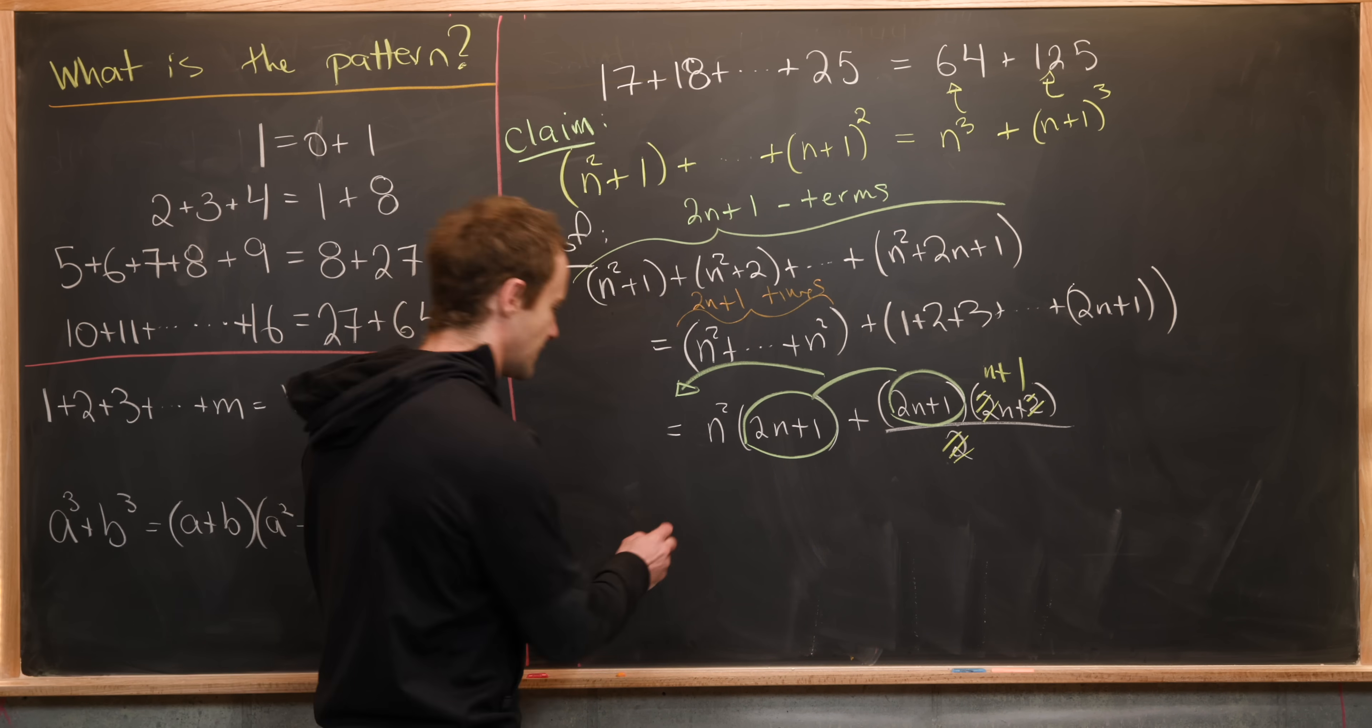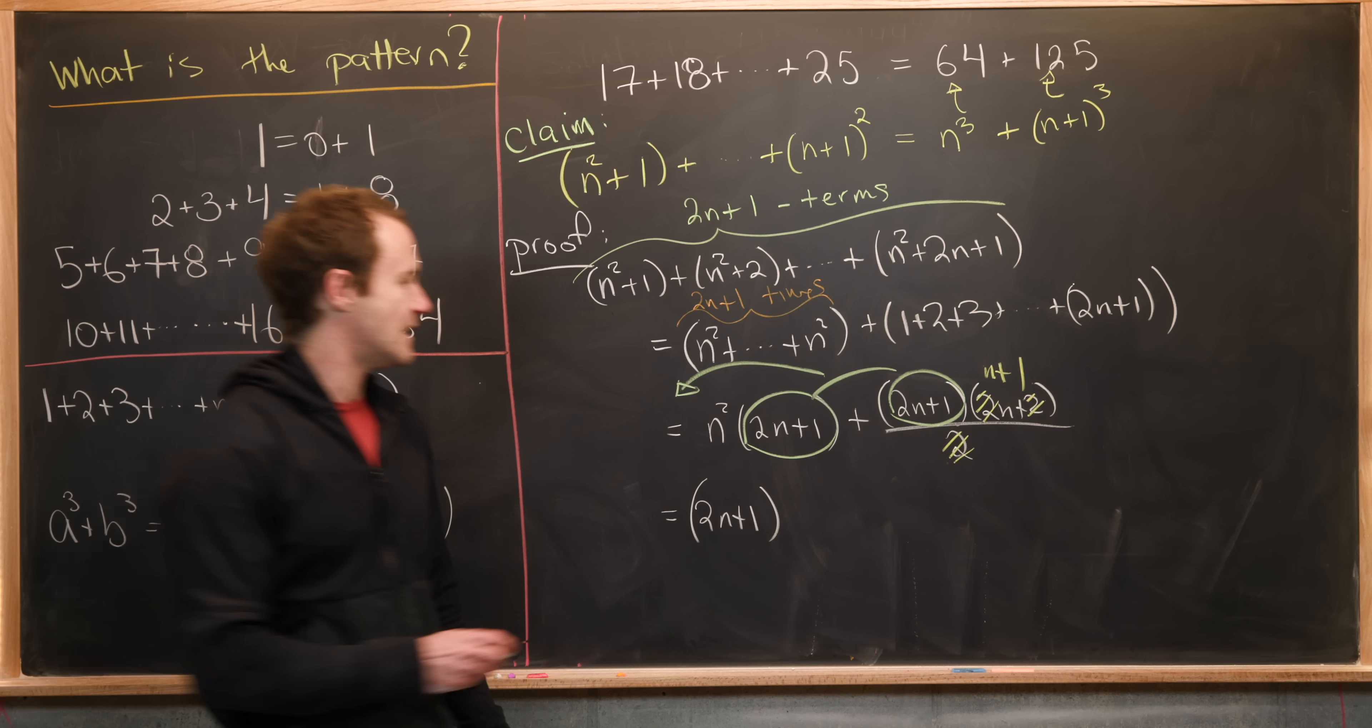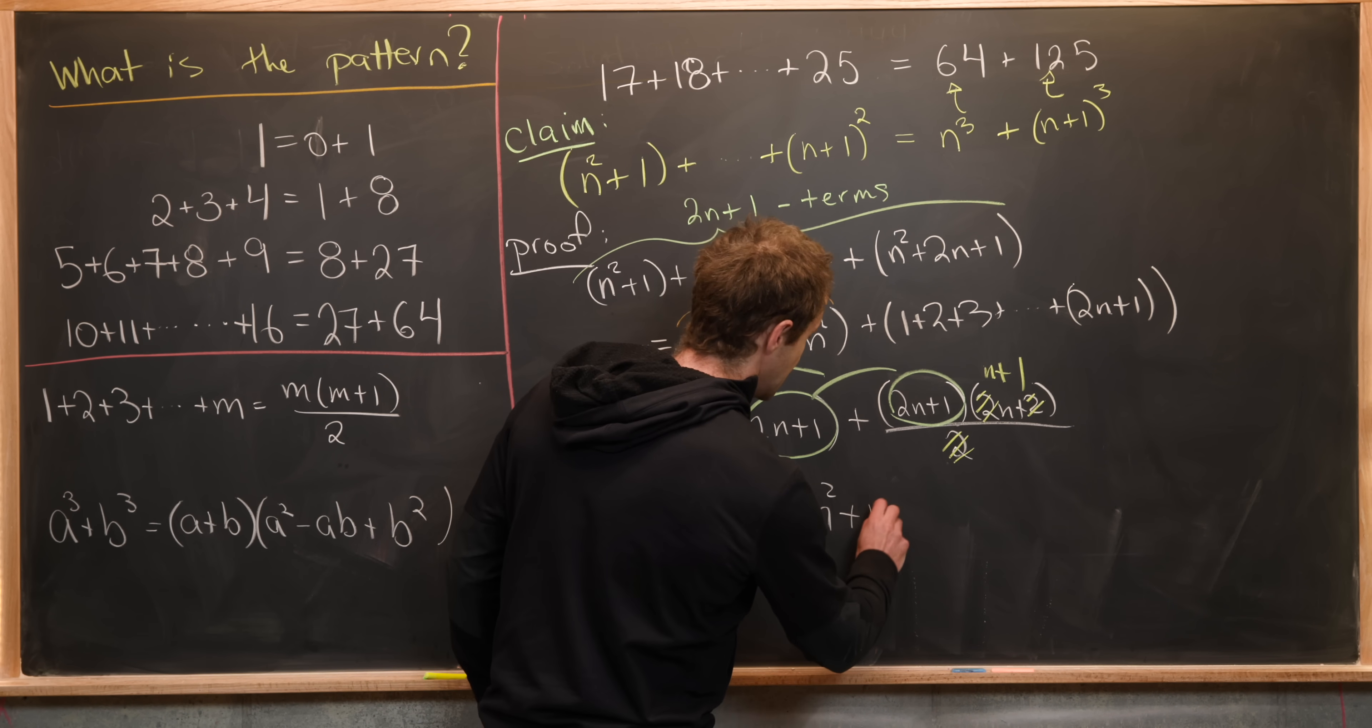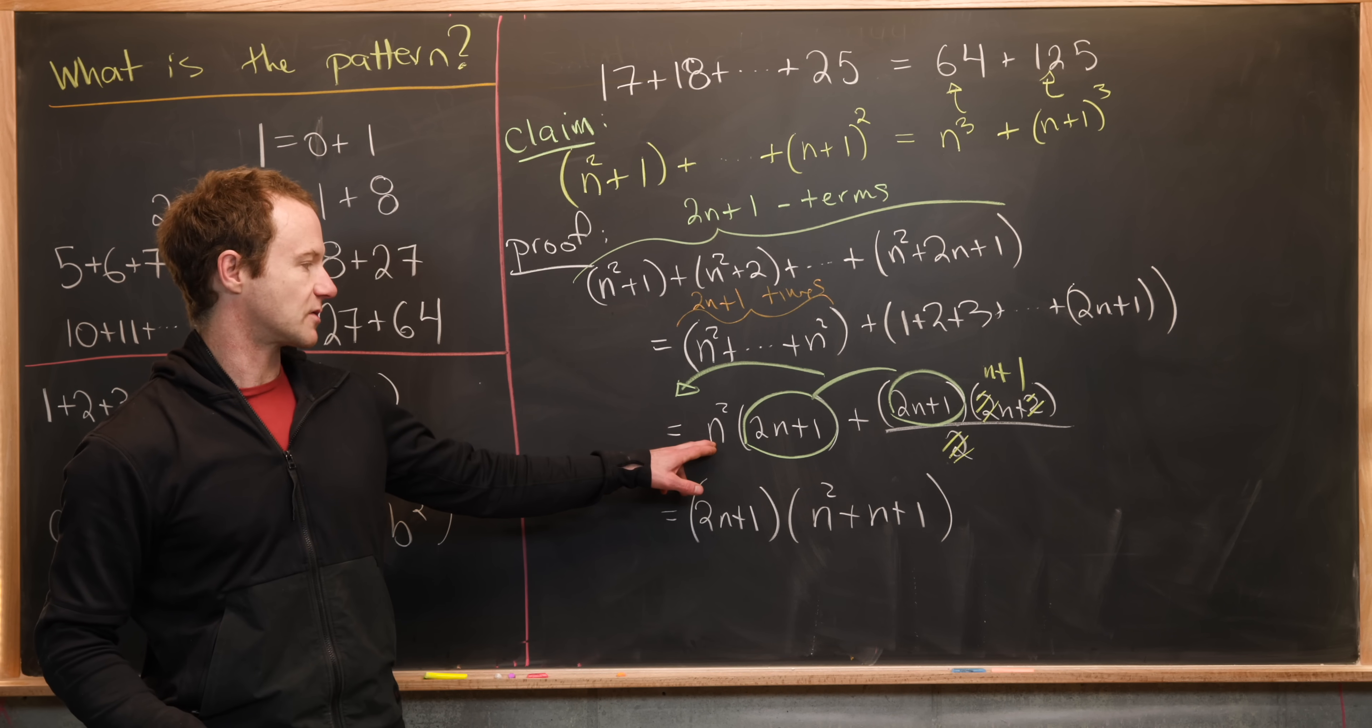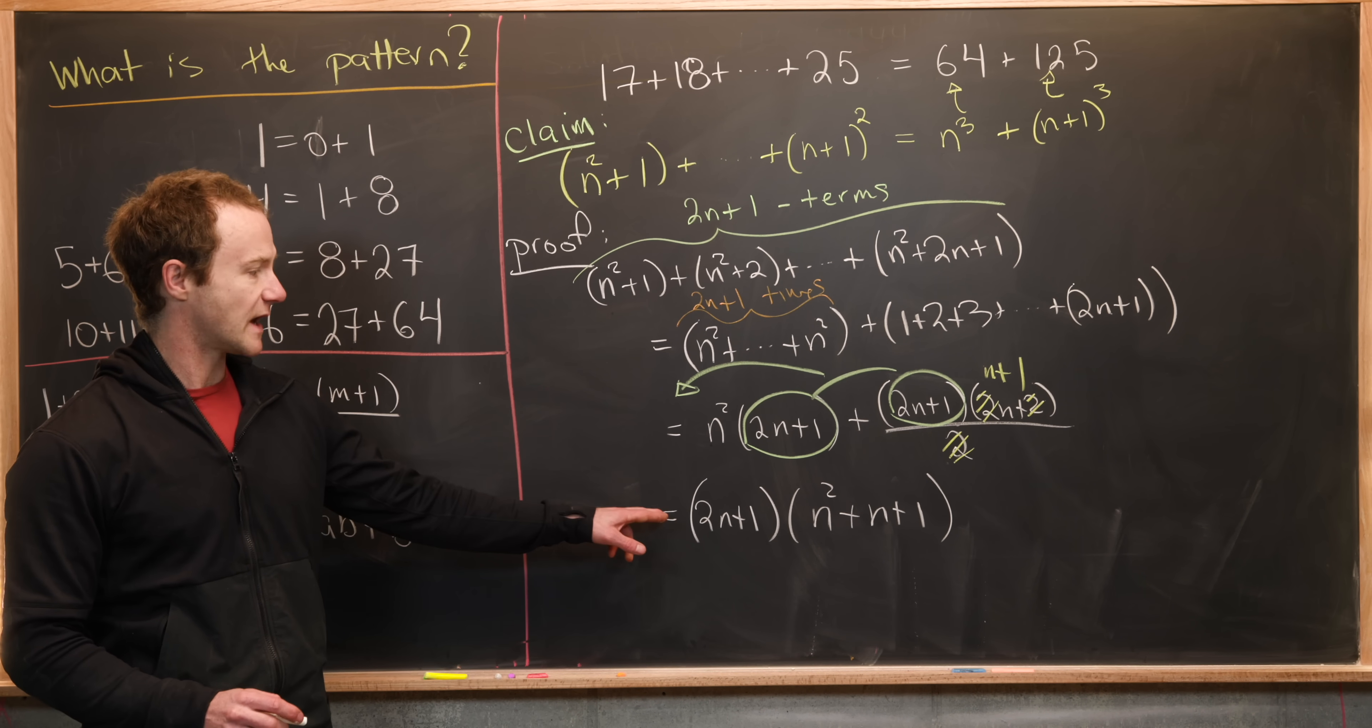So let's see what that leaves us with. We'll take a two n plus one out. And then we are left with n squared plus n plus one. So we've got n squared from this term right here, and then n plus one from those terms right there. Okay.